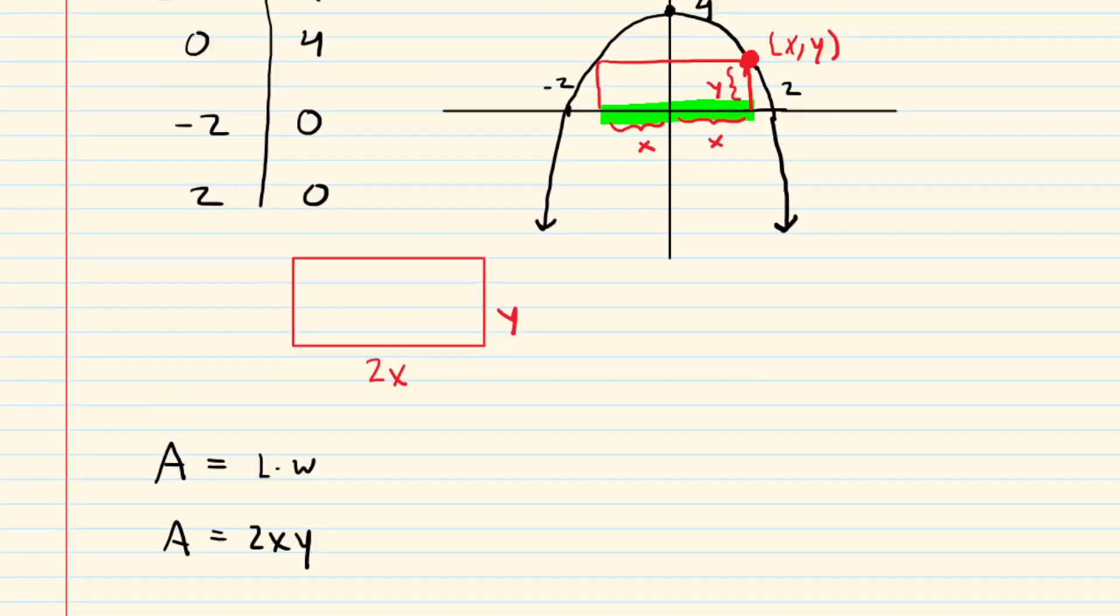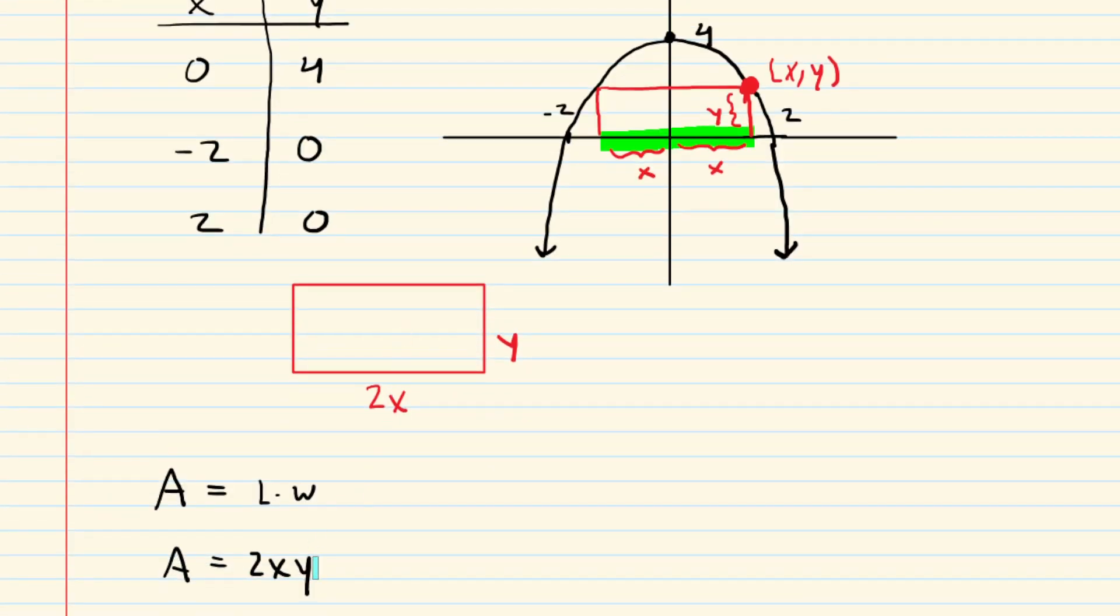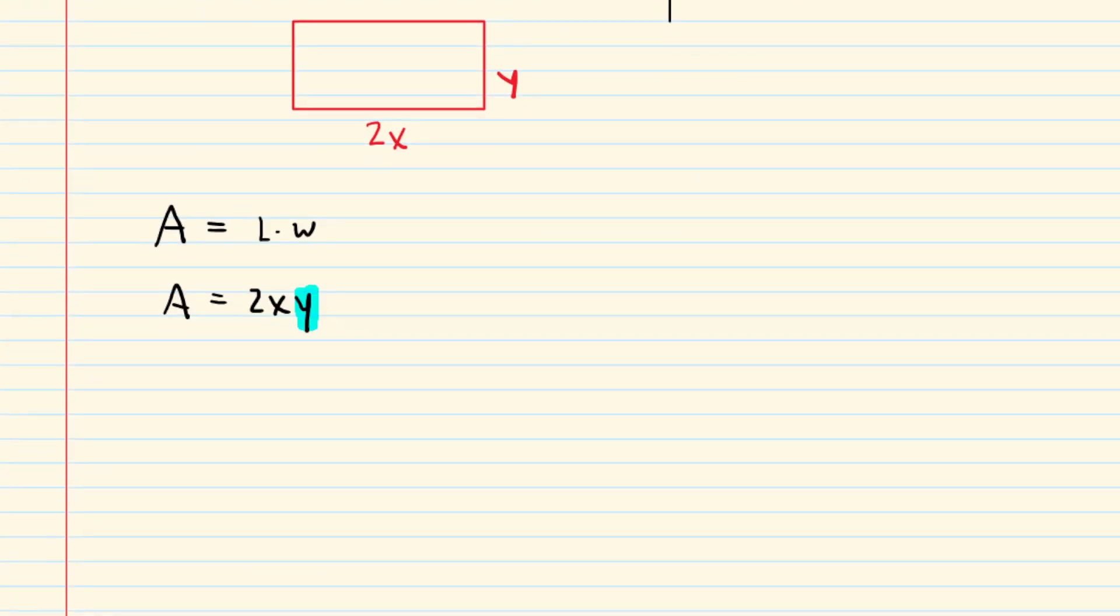So we have to make a substitution here. But that's not going to be a problem, because if you look back at the original equation, we know that y was equal to 4 minus x squared. So that means that in this area equation, that y right there will be substituted with the 4 minus x squared. So let's go ahead and make that substitution. We would have area equals 2x multiplied by 4 minus x squared.